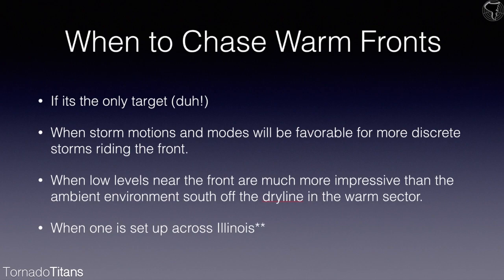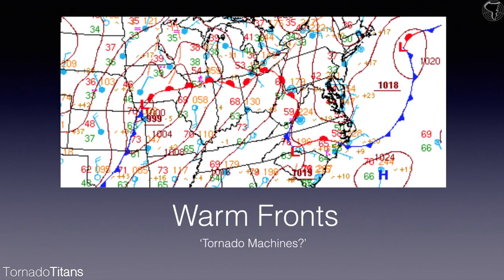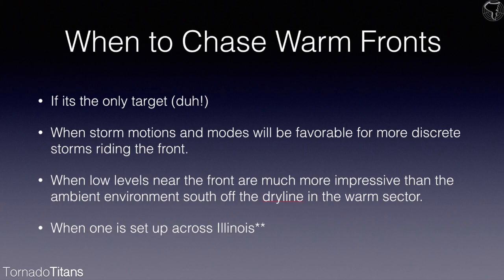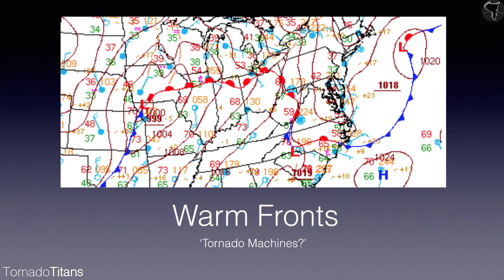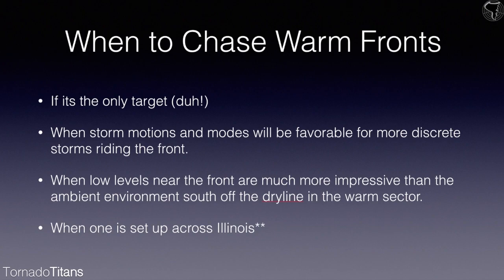Chase a warm front when low levels near the front are much more impressive than the ambient environment south of the dry line or in the warm sector. For instance, if you have east-southeast winds along the warm front and southwest winds in Kansas City — yeah, that warm sector environment isn't the greatest for tornadoes, but the warm front environment is very moist with good east-southeast winds, so there's no reason not to chase it. And of course the golden rule: when a warm front is set up across Illinois, you definitely want to chase that one. Warm fronts are fickle, but if you can get somewhat discrete storms riding it for a sustained period, you can see some big tornadoes and really good storm chases.